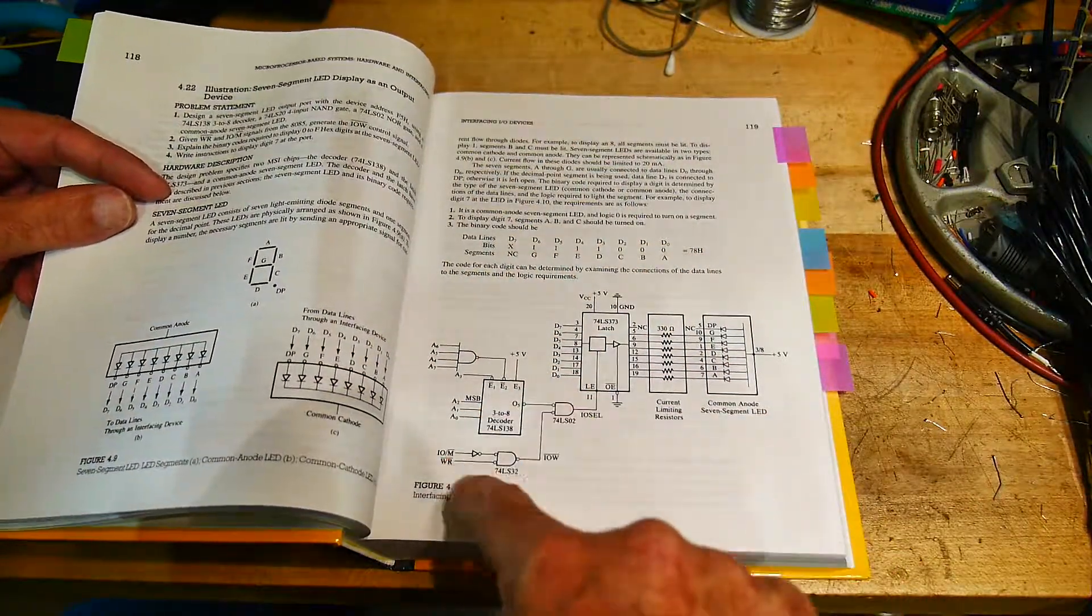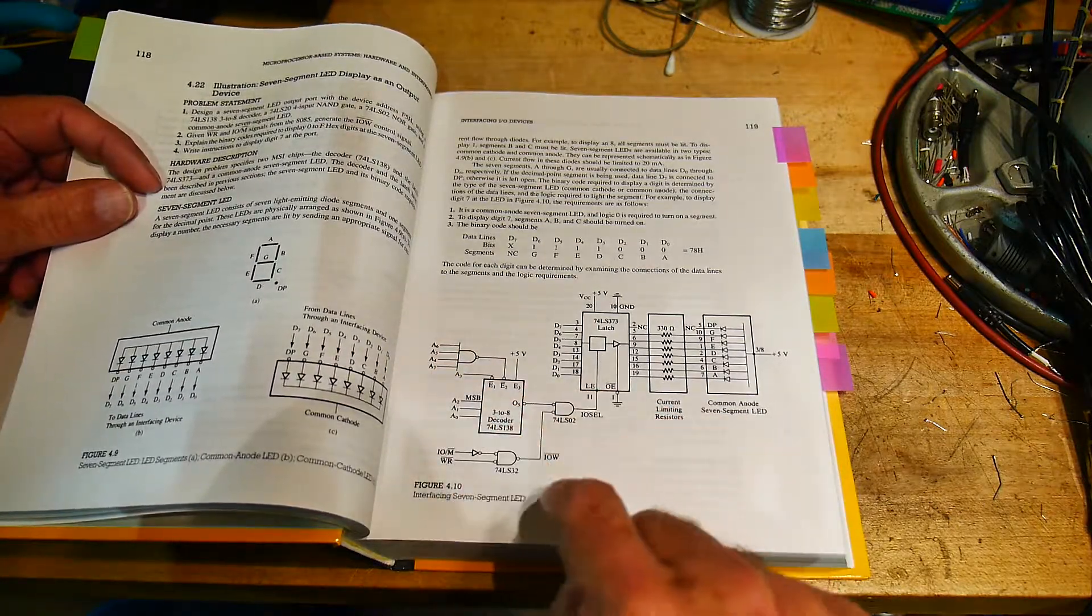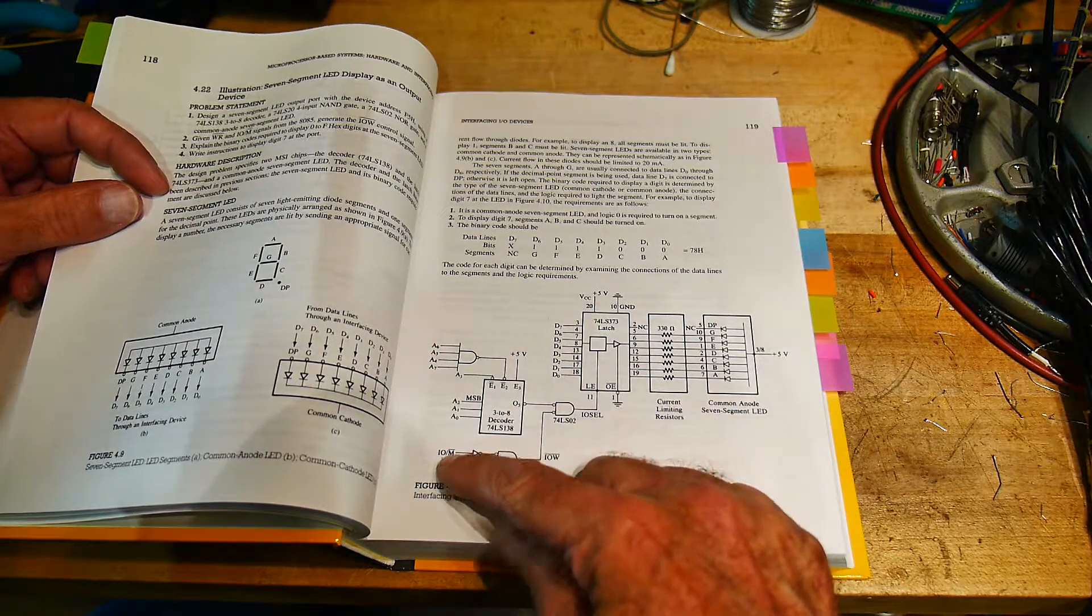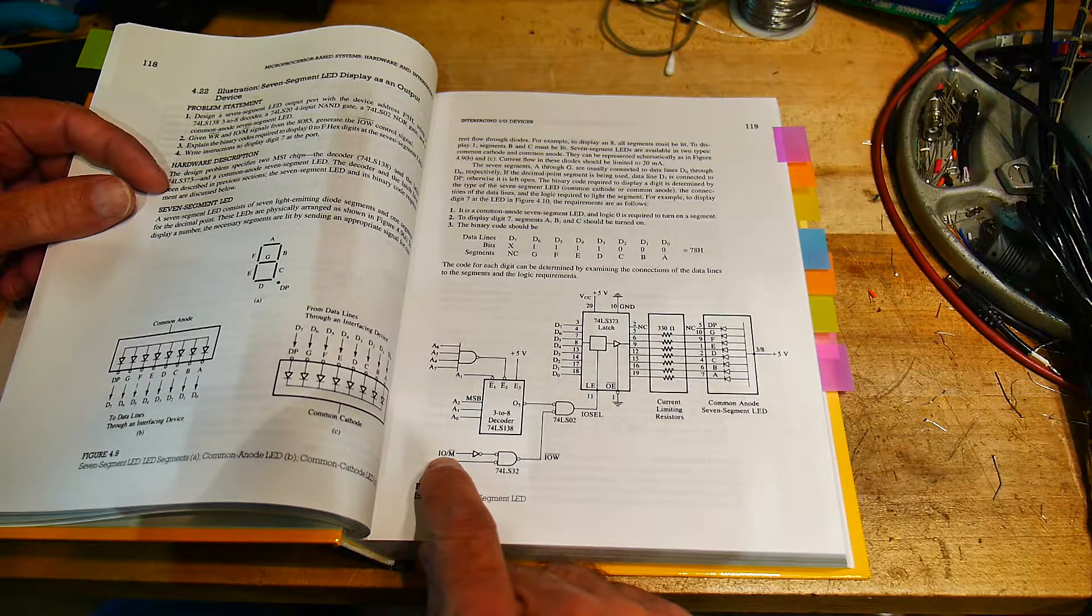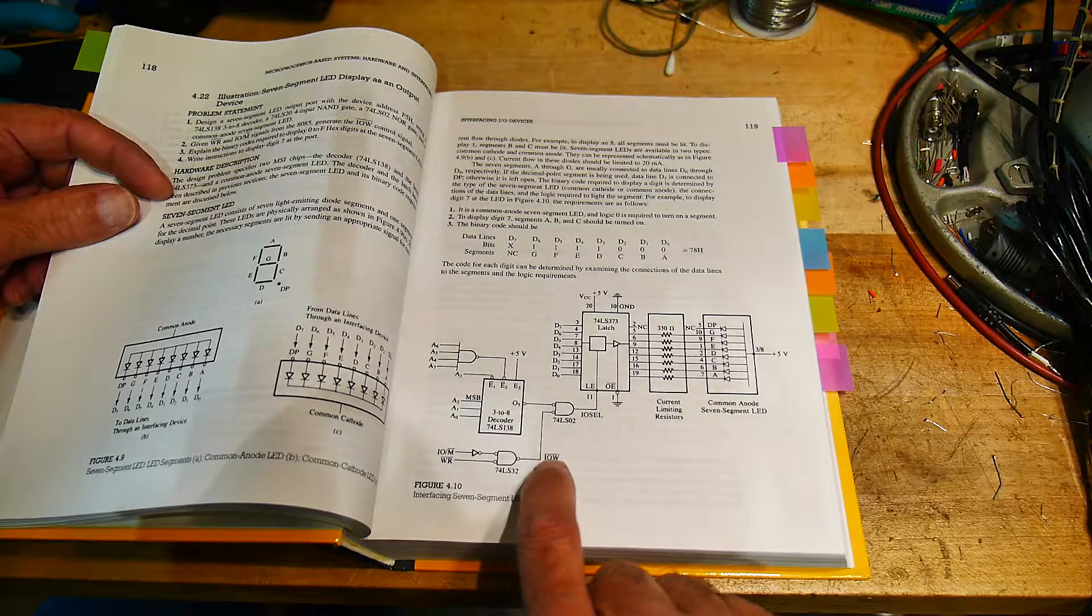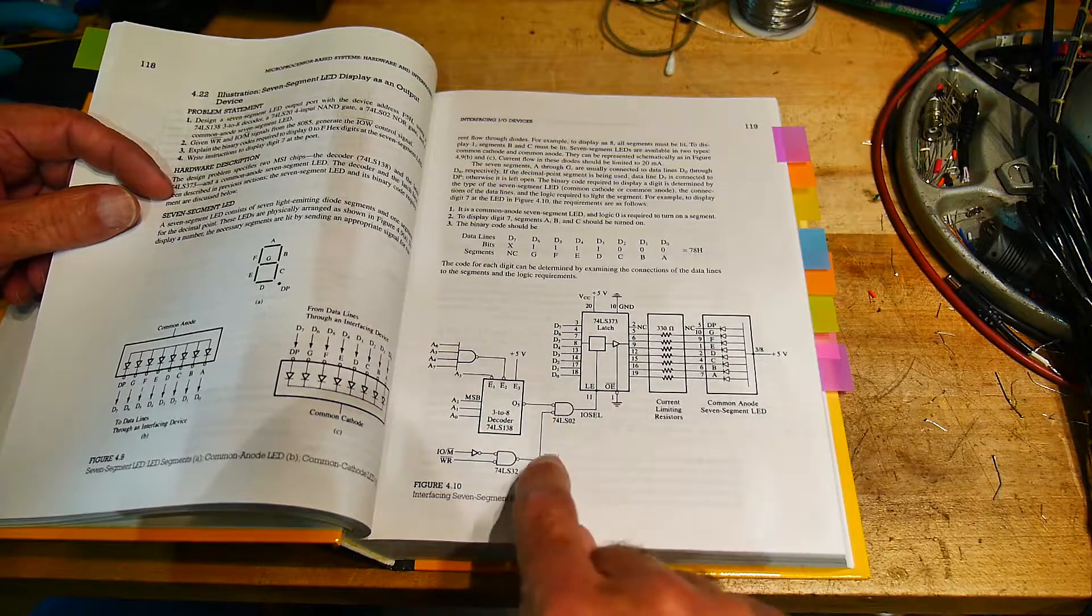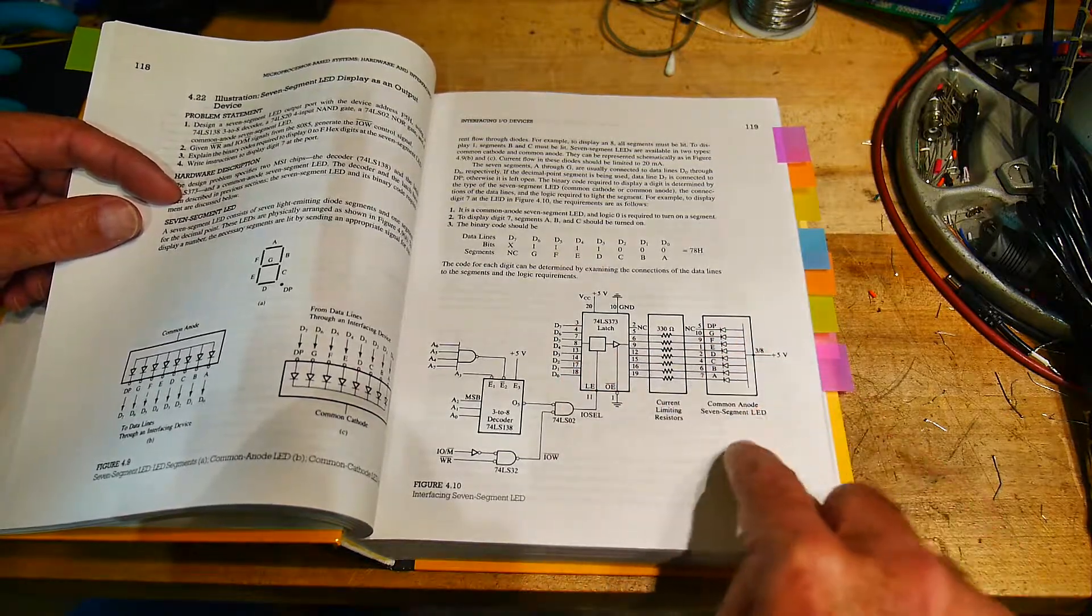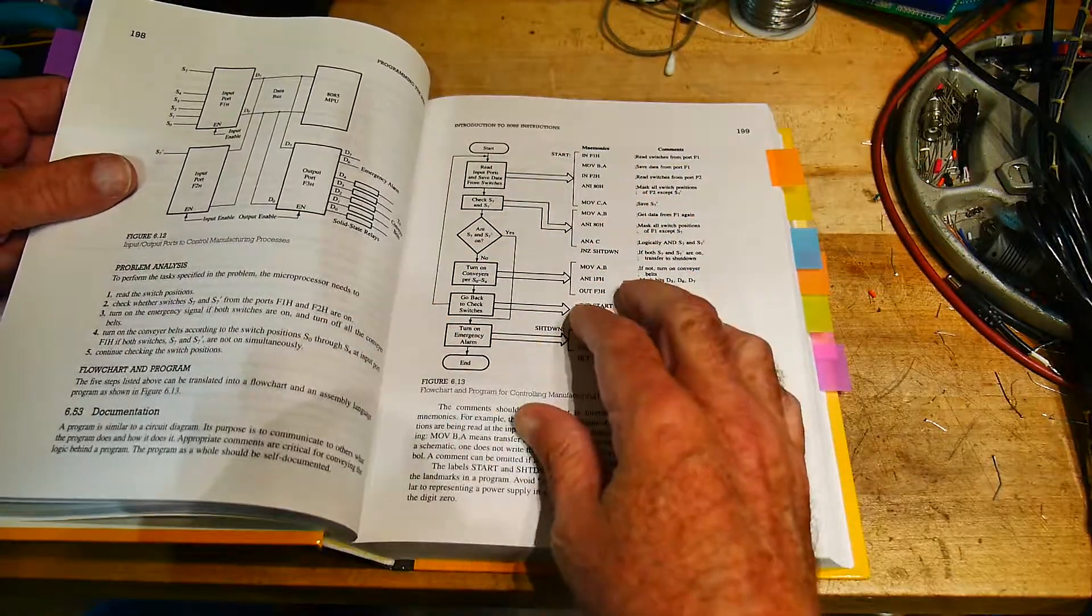This should look familiar from a lot of the stuff I was doing on my S100 boards. You need to decode the addresses so there's circuitry here that decodes the addresses and then decodes from the 8085 whether it's an IO operation or a memory operation and whether it's a read or a write. This little circuit then generates an IO write signal and it's added with the address so you'll get an IO write only for this particular address. In this particular case it's to drive a seven segment LED. It's very laid out, very simple to think about.